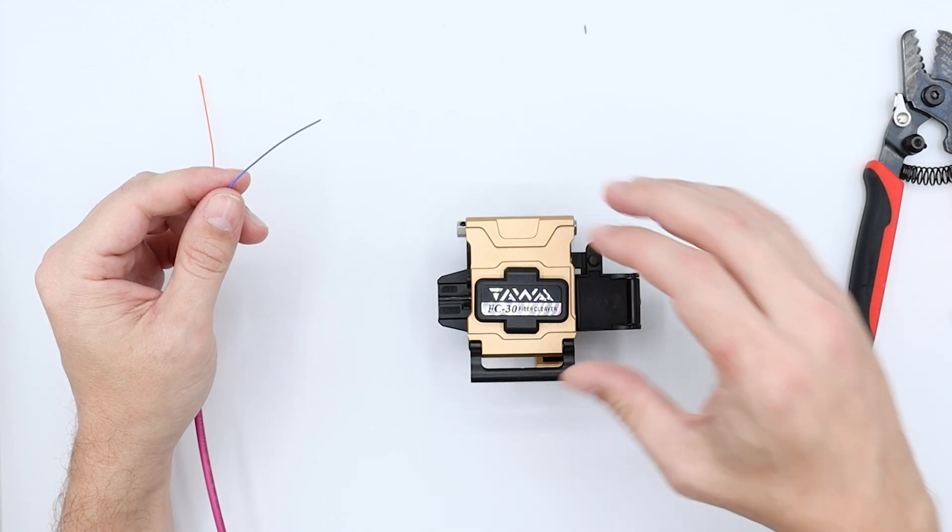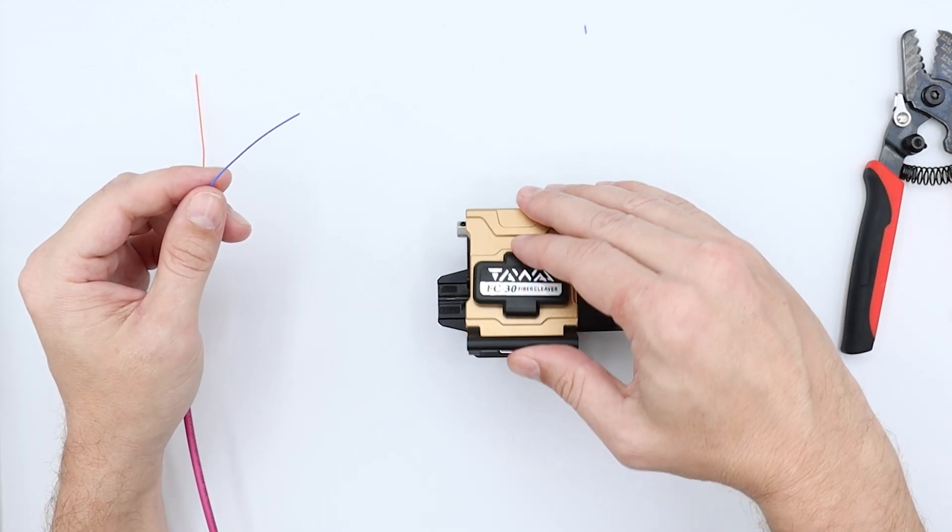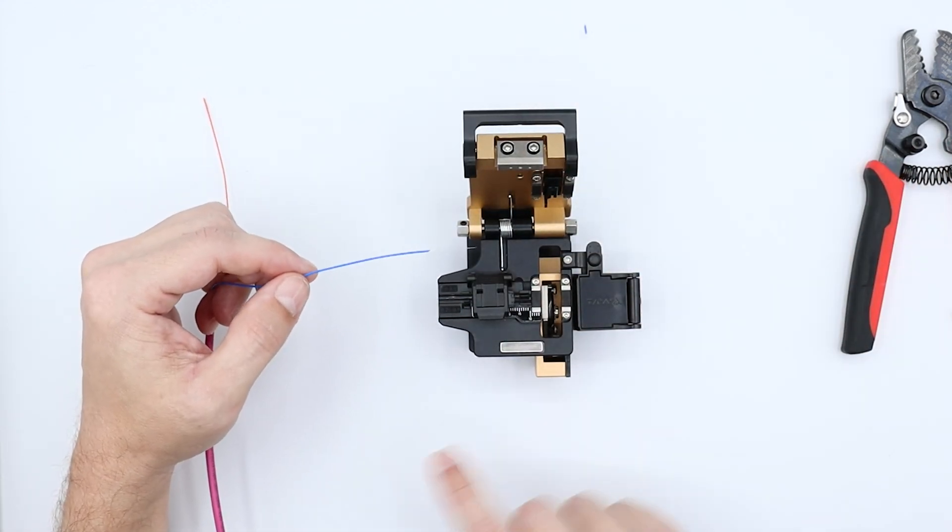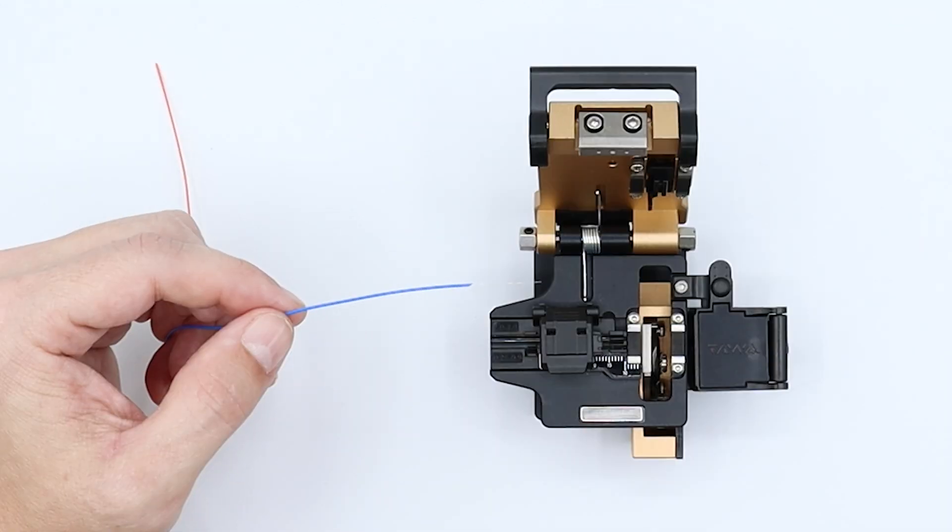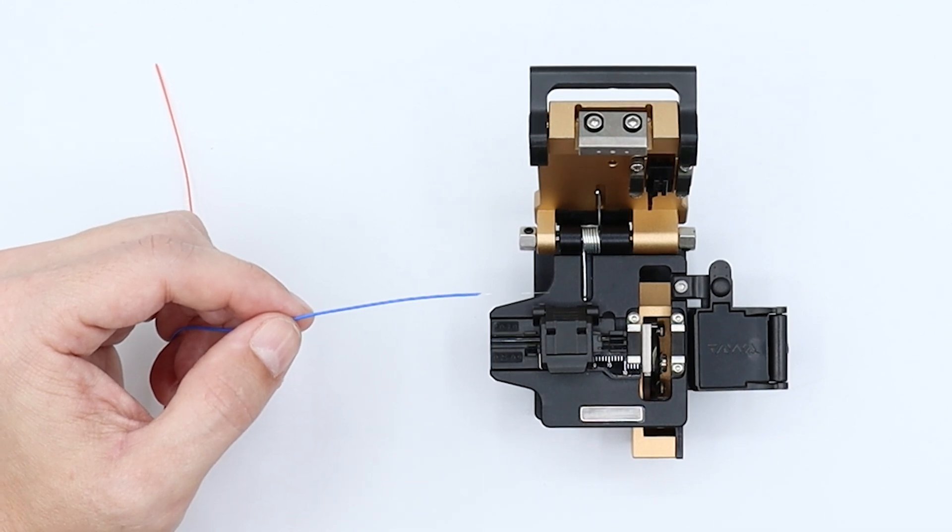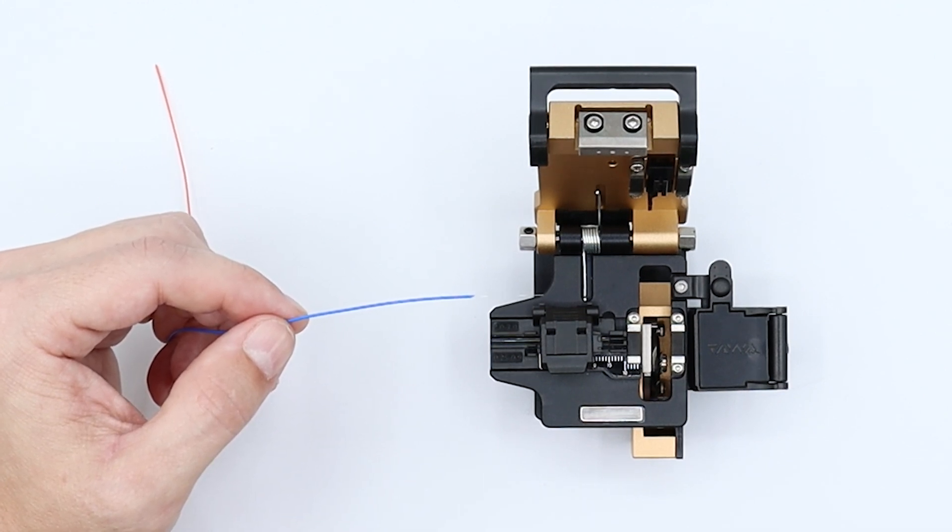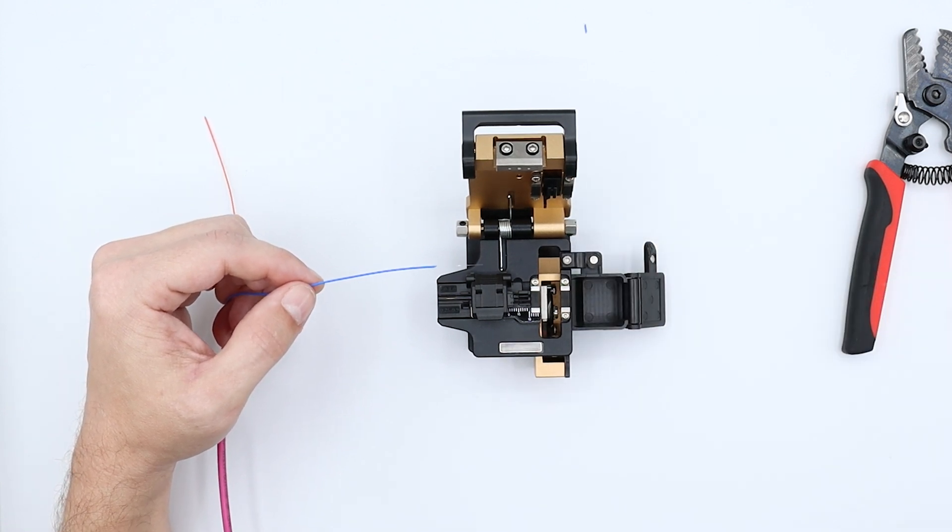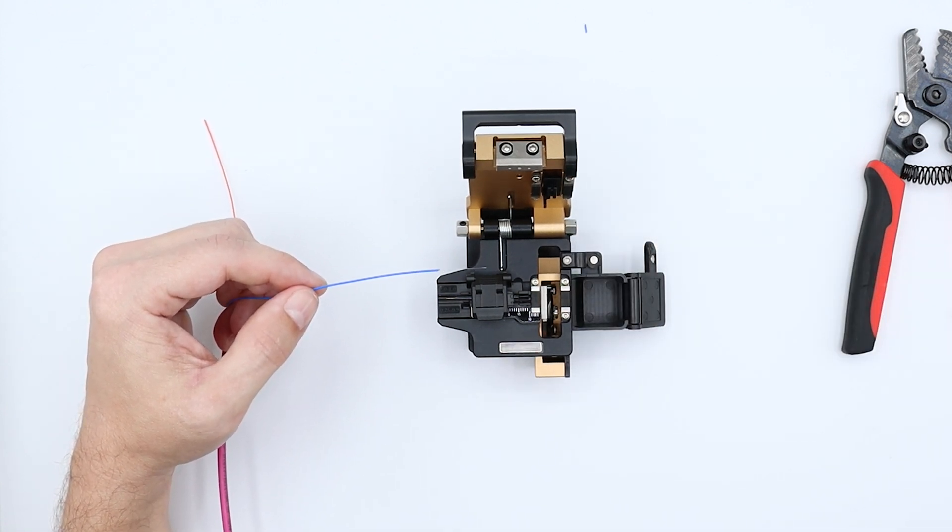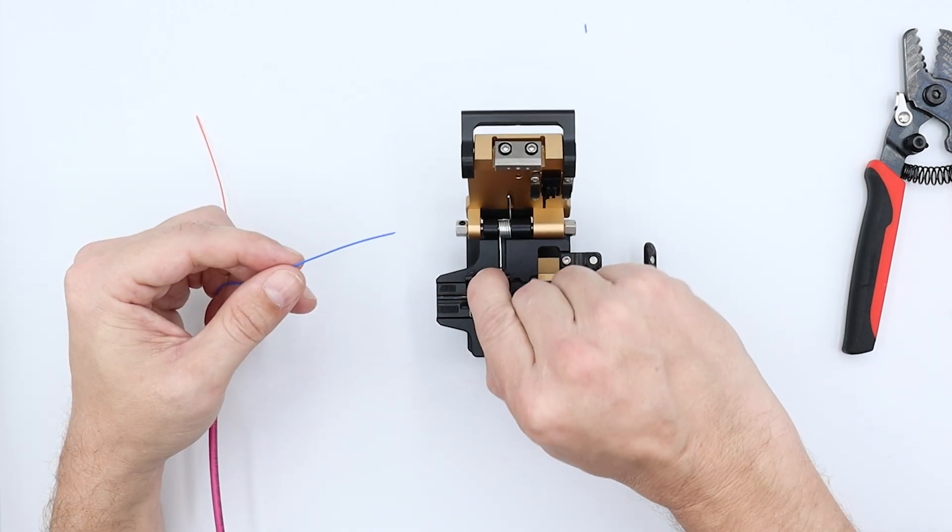This is just a standard cleaver, nothing too special, but it's got the adjustments for the different fiber optic cleave lengths that you need. There's some additional adapters that can be added depending on the size of fiber that you're going to be cleaving. Here actually on this cleaver, it's pretty nice, it has its own little waste bin for the excess fiber that you're cleaving off.